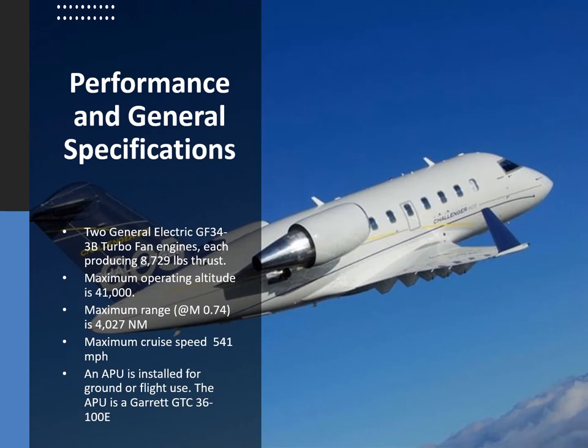General performance and specs: we've got two GE CF34-3B engines, each producing 8,729 pounds of thrust. Maximum operating altitude is 41,000 feet, with a range of just over 4,000 nautical miles at Mach 0.74. Maximum cruising speed is 541 miles per hour. We've got a Garrett APU installed which we can use for on-ground use and also in flight to provide electrical power or air for the pneumatic systems.